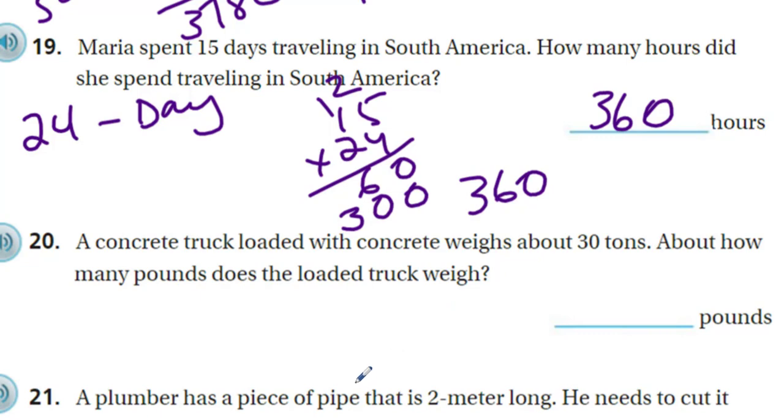It says a concrete truck loaded with concrete weighs 30 tons. About how many pounds does the loaded truck weigh? It says about, that's just a little estimate here. Well, if it has about 30 tons, and because there's 2,000 pounds in one ton, we're just doubling the numbers here. 3 times 2 is 6. We've got a lot of zeros to deal with, right? You have to be careful here because we have one zero from our 30 and then we have our 2,000. So there should be a total of four zeros, and I see four: 60,000 pounds.